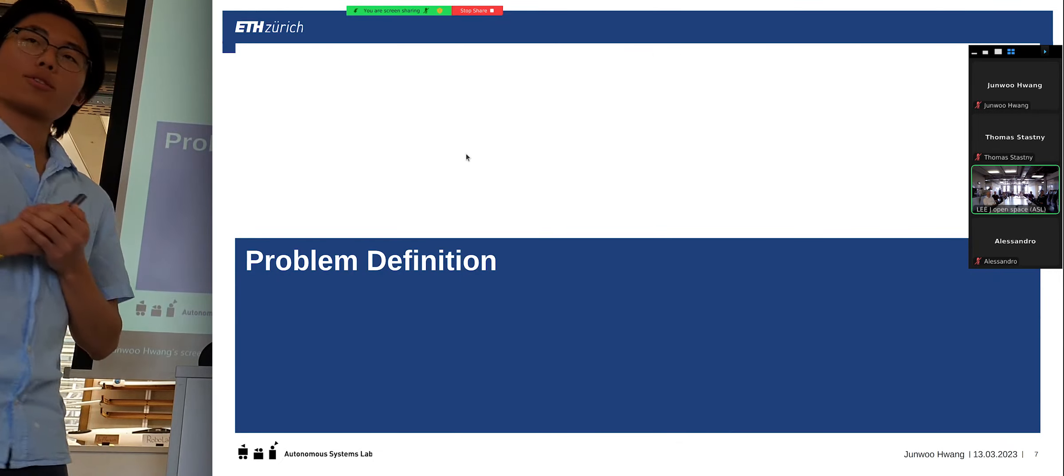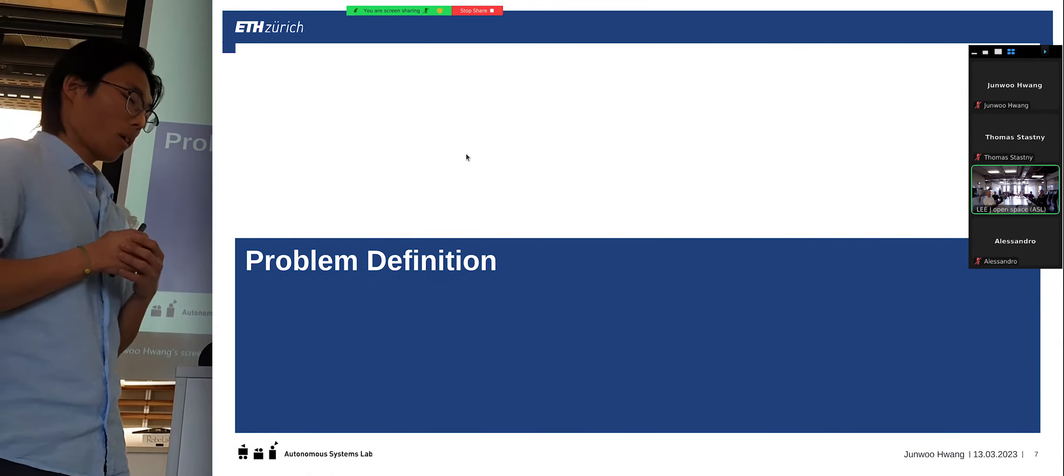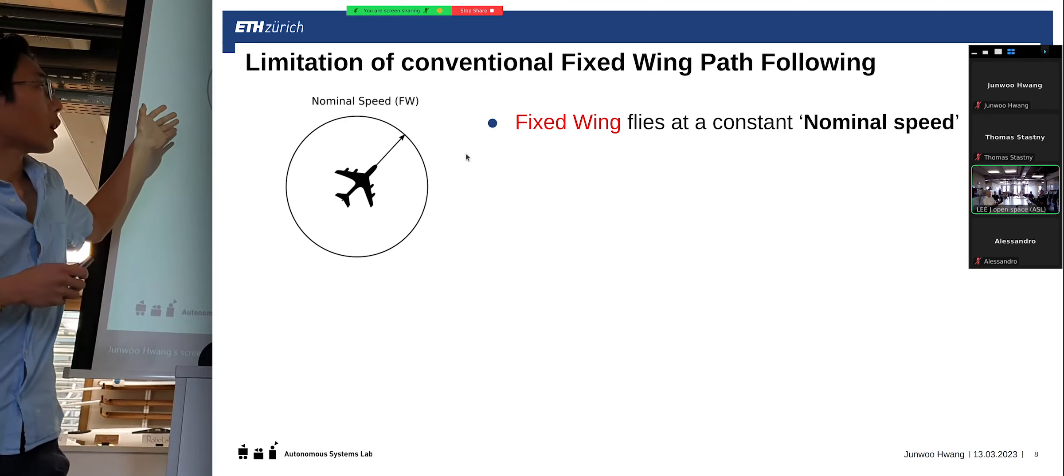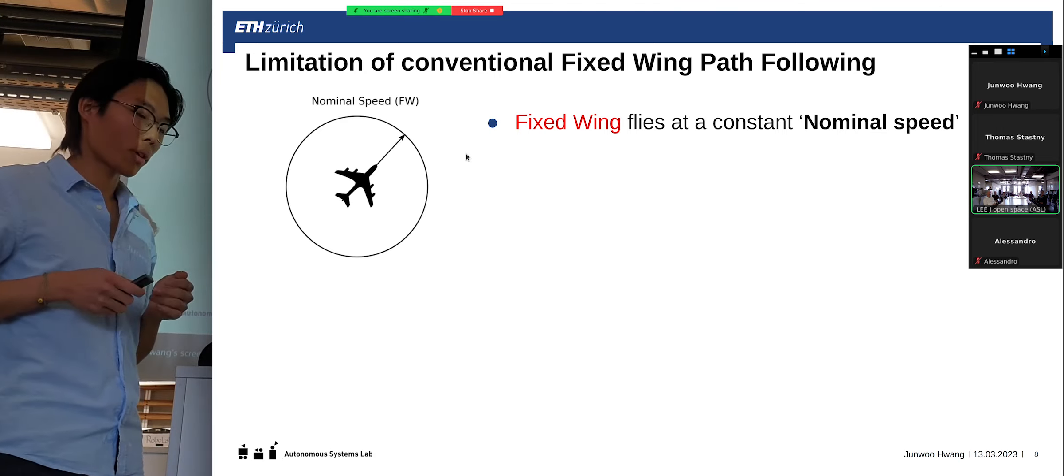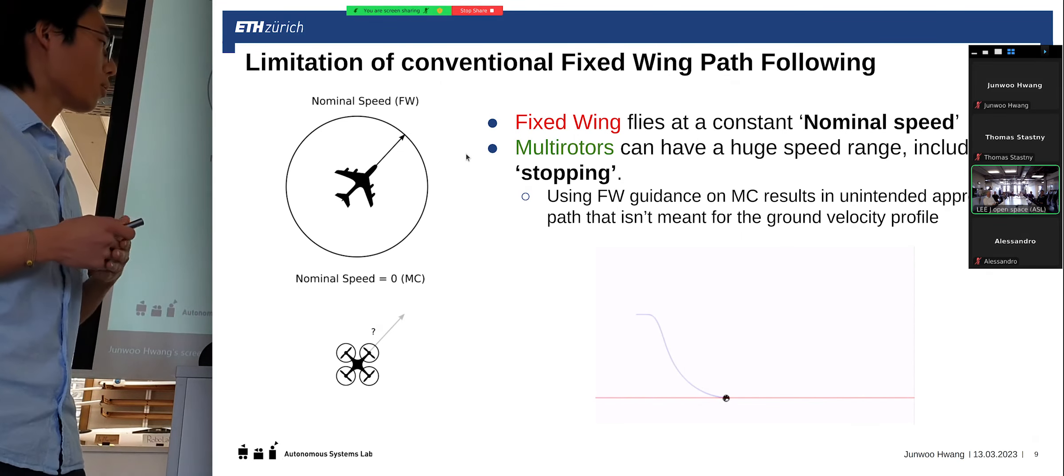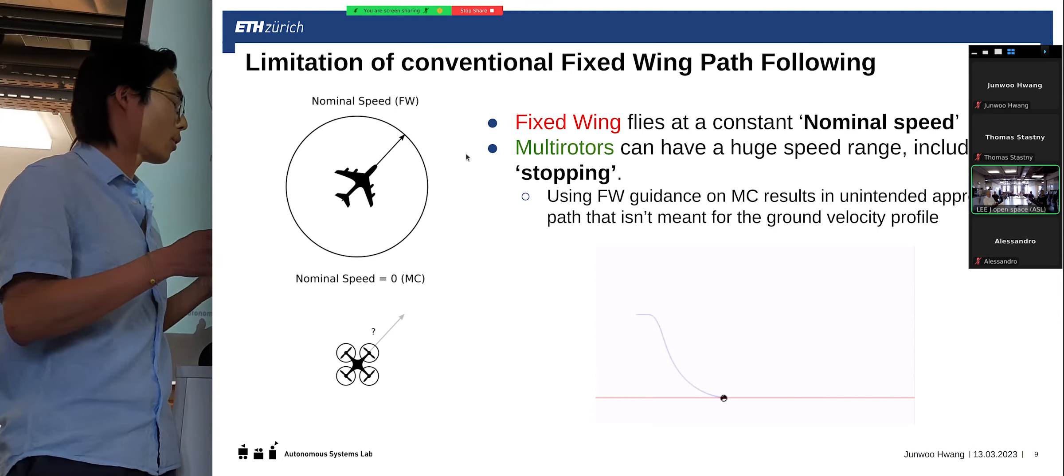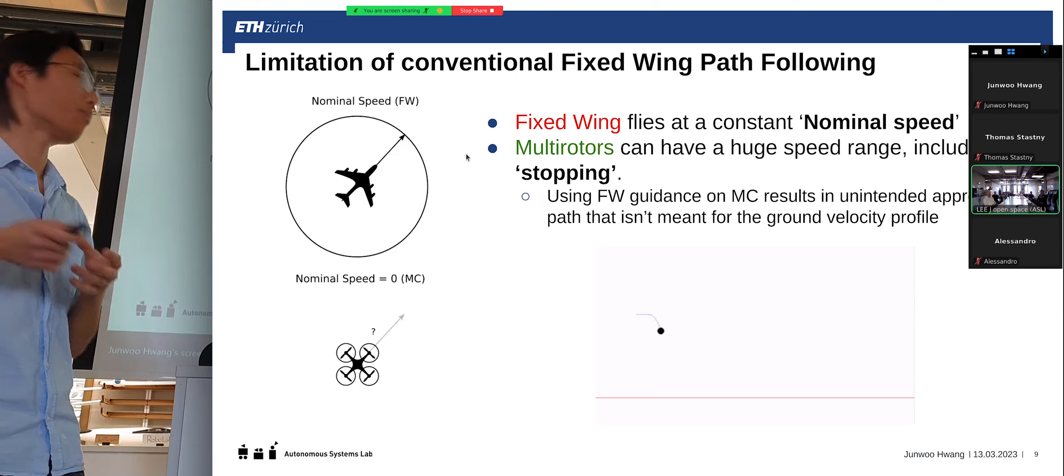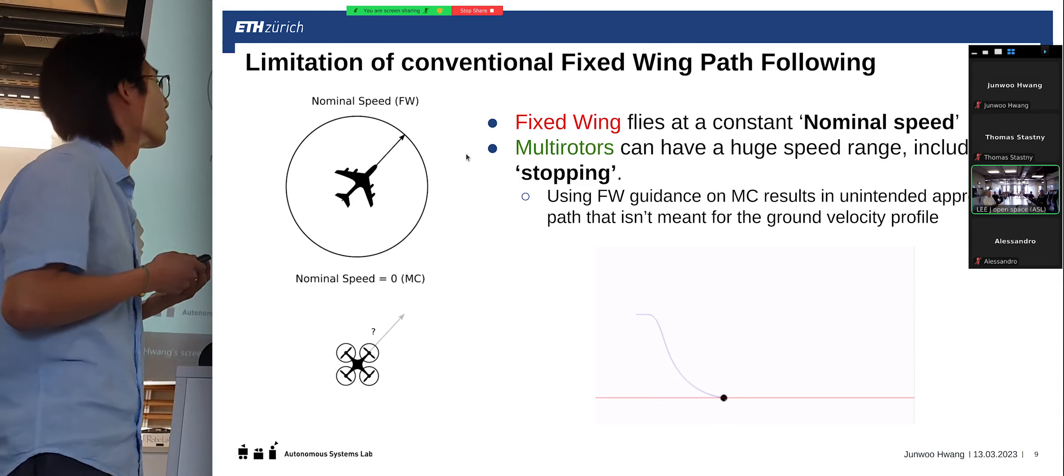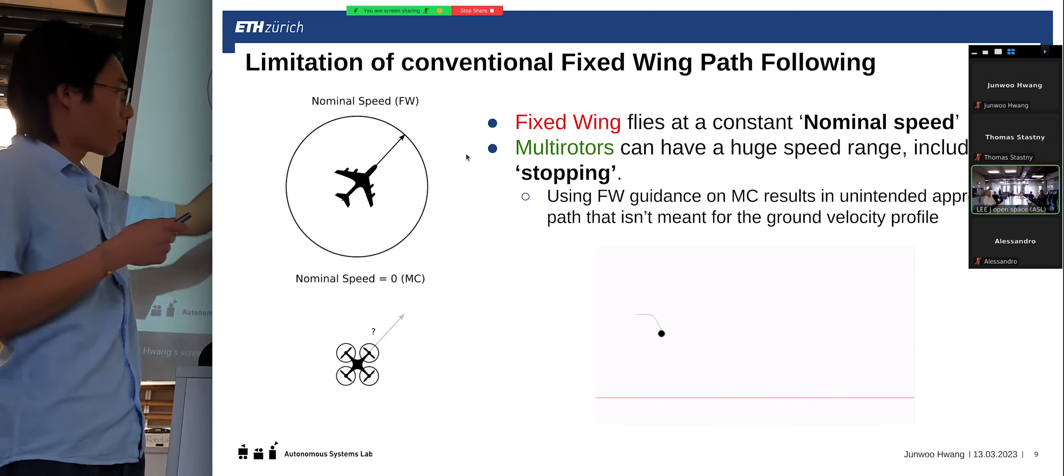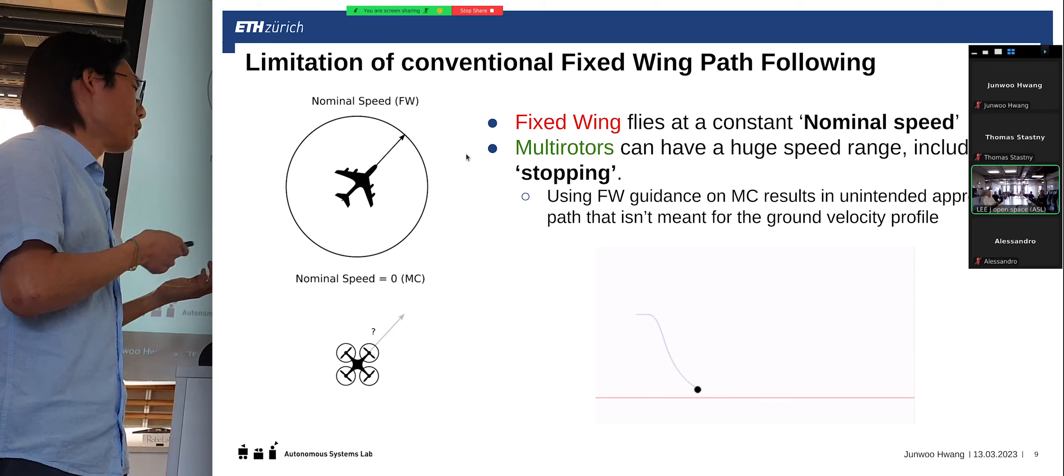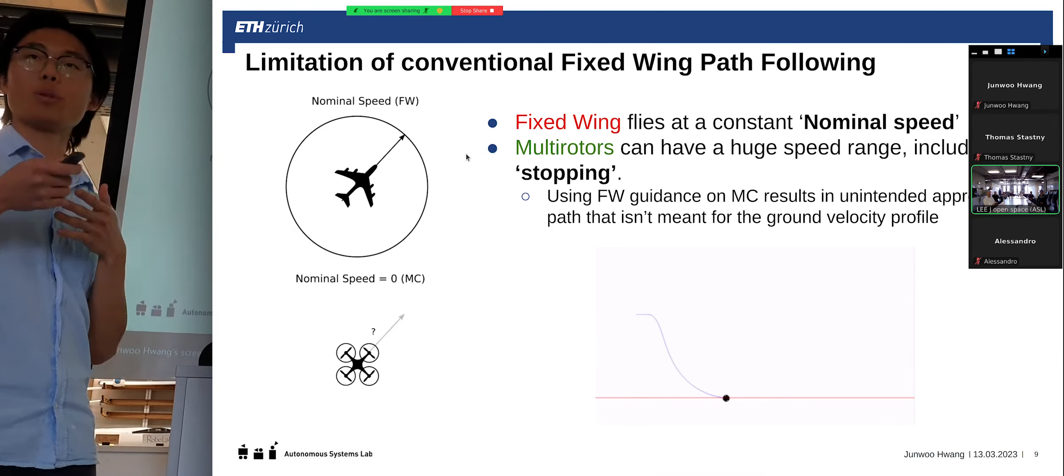So let's try to define the problem. What is the current conventional fixed-wing path-following balance limitation? So fixed-wing, as I just described, has a constant nominal speed. However, for multirotors, they don't have a fixed nominal speed. And so what happens, this is an example of me adapting the current fixed-wing path-following directly onto the case of multirotor. And I just set the nominal speed to zero, which shouldn't be accounted for in the thesis. But what it does is it draws this undefining curve where it's actually not meant to be used in this way. It does work, but it's not optimized for the multirotors of the thesis.